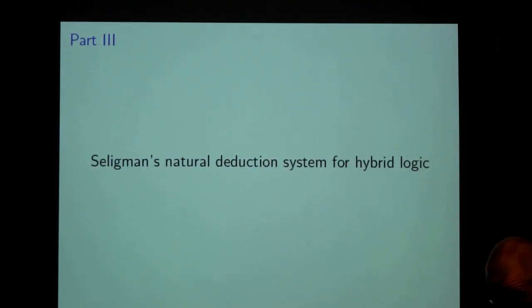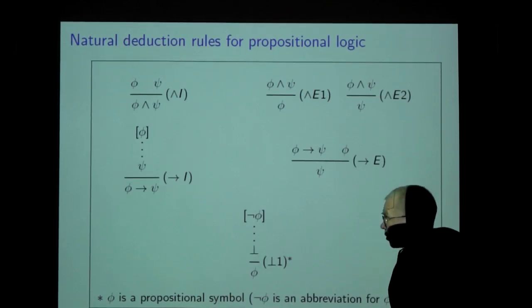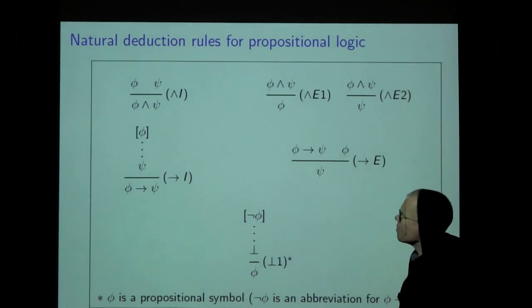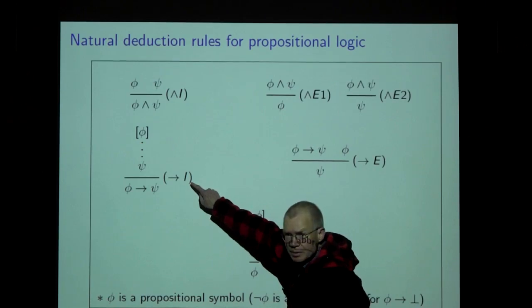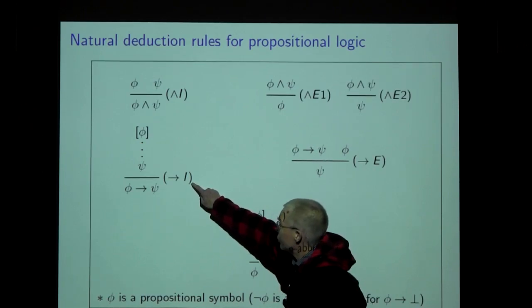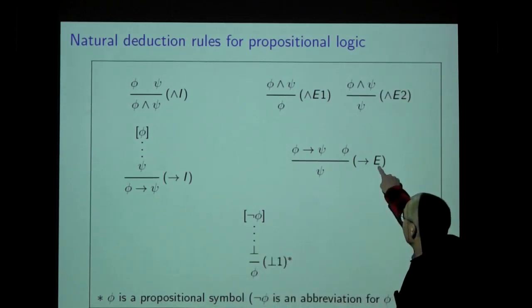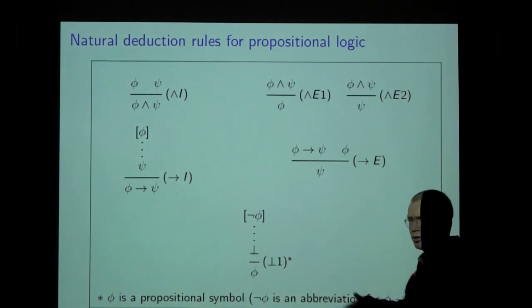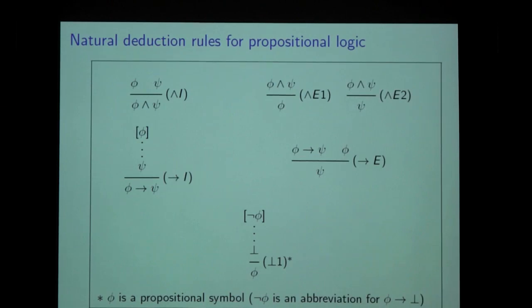The 'I' and 'E' labels on the rules stand for introduction and elimination. It is simply a systematic way to name the rules.